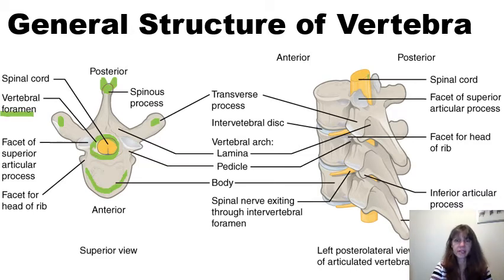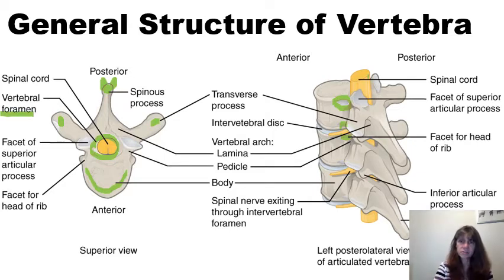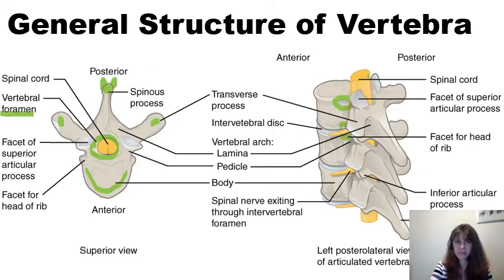Because we are viewing the thoracic spine, you can also see the area where the head of a rib will form a joint or articulation with the thoracic spine — there is actually one above and one below for one rib. So there are superior and inferior articular facets for these ribs.